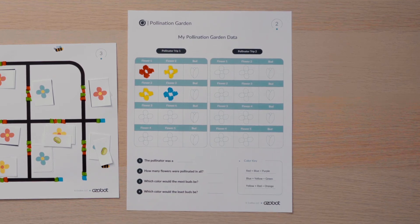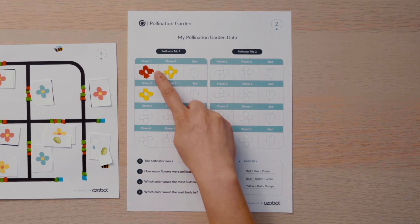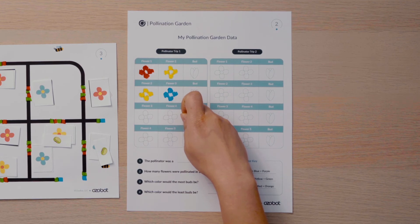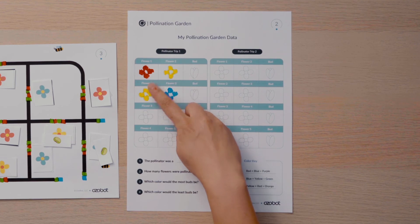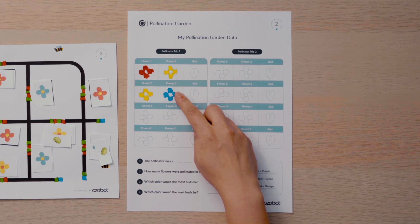Here's the data from my first trip. First my bot went to a red flower, so I colored flower number one red. Then my bot traveled to a yellow flower, so I will color flower number two yellow. Then my bot moved to a blue flower, so I colored flower number three blue.